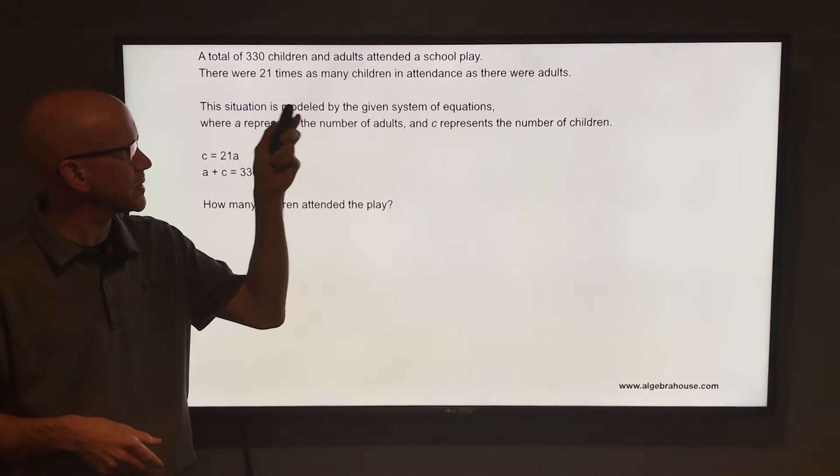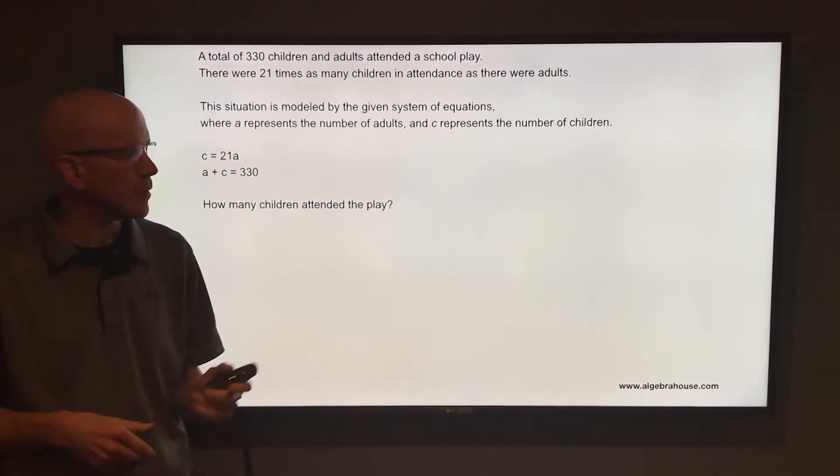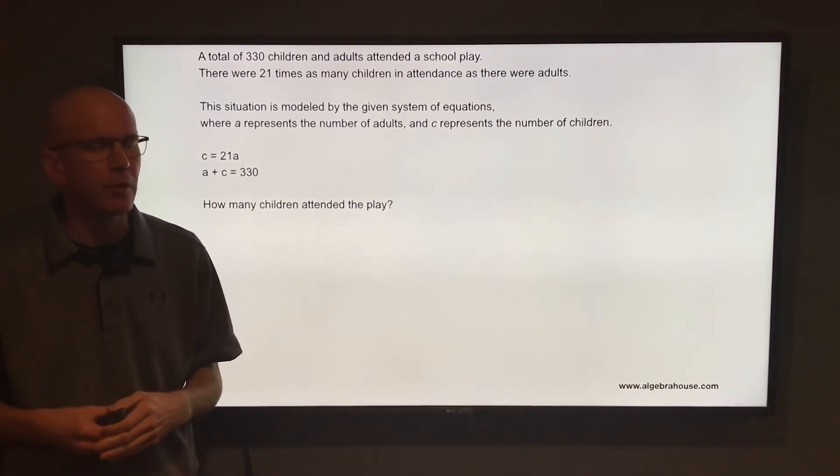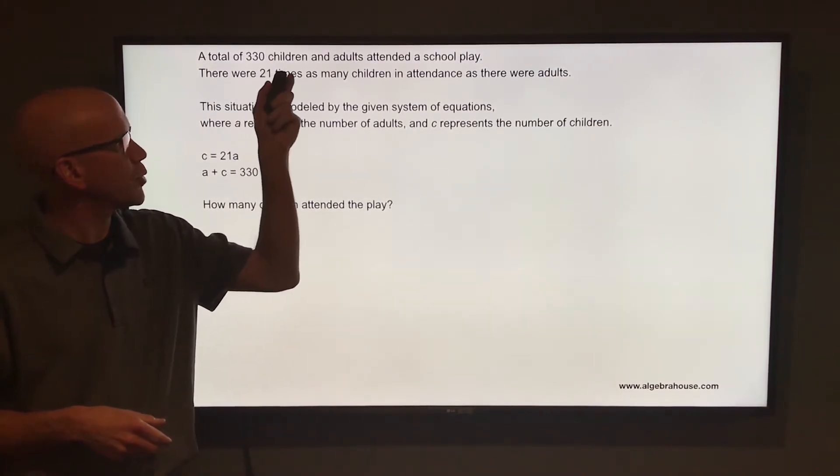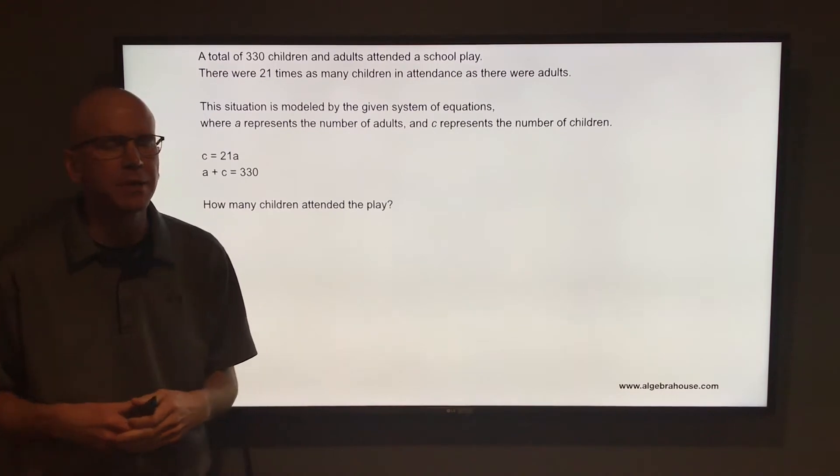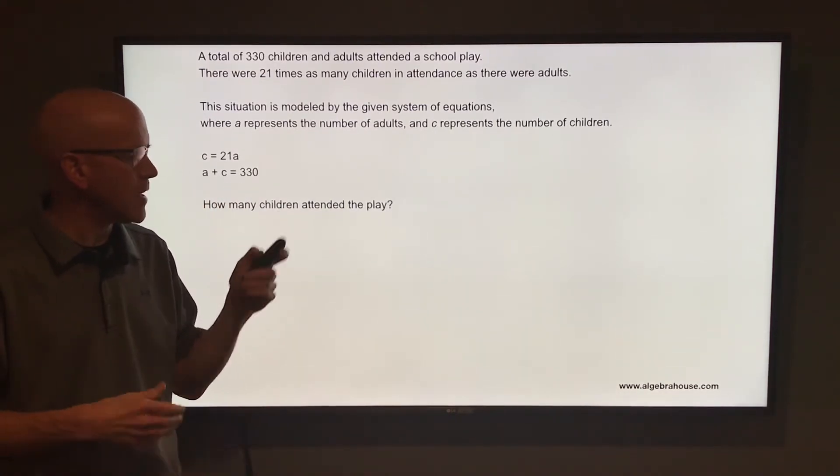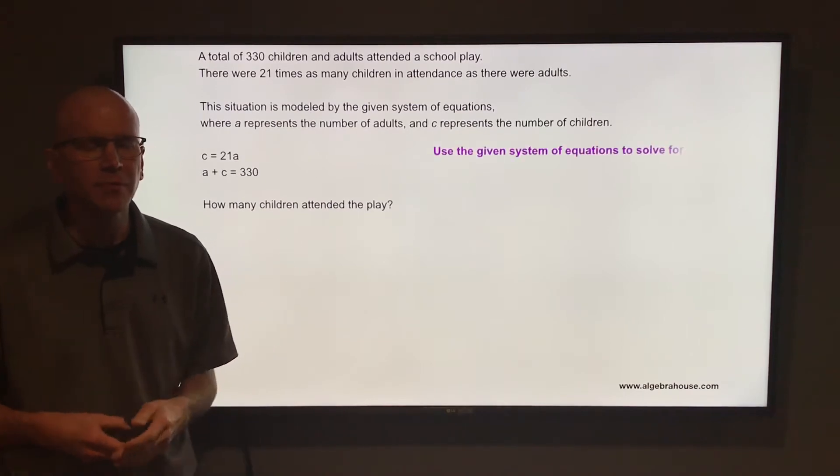There were 21 times as many children in attendance as adults. So C, the number of children, is equal to 21A, 21 times the number of adults. It also says a total of 330 children and adults attended the play. So A plus C, the adults plus the children, equals 330. So we have that system of equations to work with.